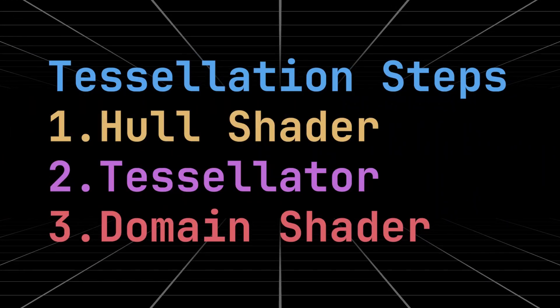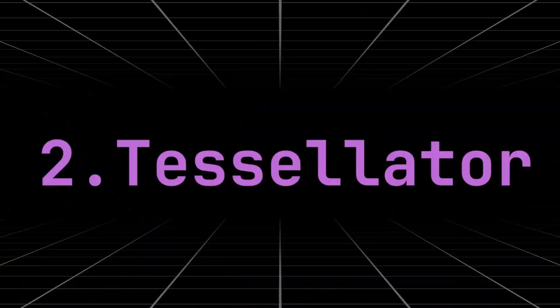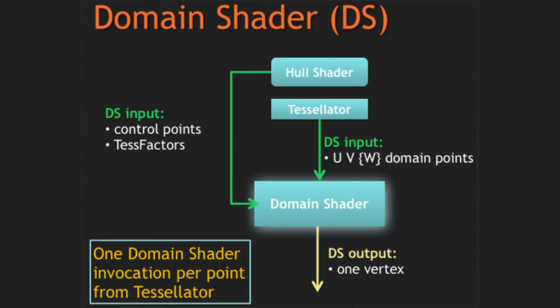Tessellation is made up of three components. First is the hull shader — a programmable stage that determines how much tessellation we want on the different patches. Next is the tessellator itself, a fixed hardware component on the GPU that subdivides the input primitives into patches based on the hull shader output. Finally, the domain shader — also known as the evaluation shader — takes the tessellated vertices and control points and computes the final position of each vertex. The tessellation stage mainly focuses on refinement and subdivision.